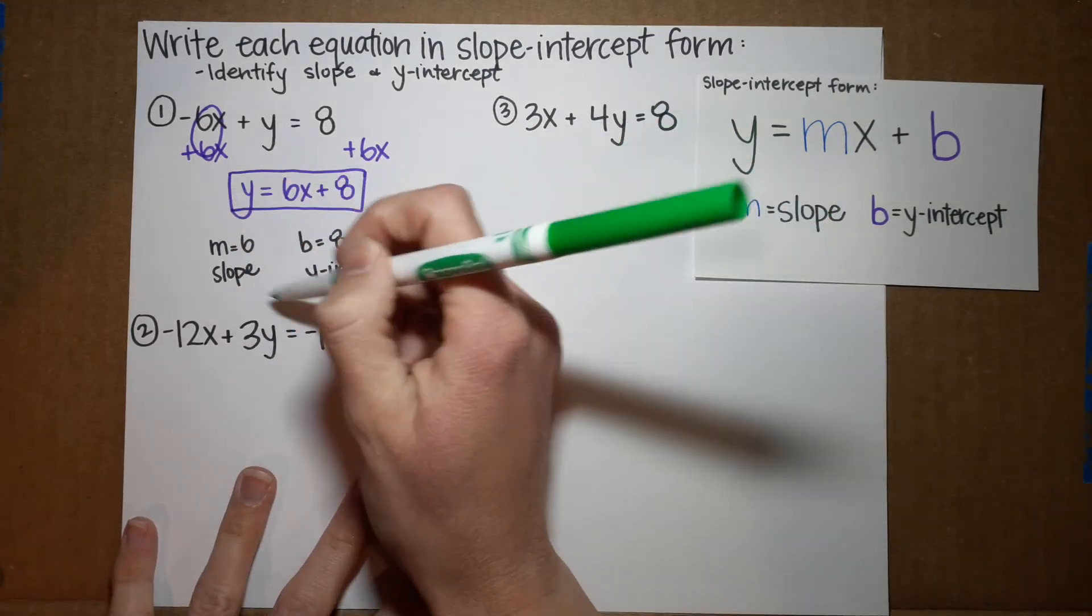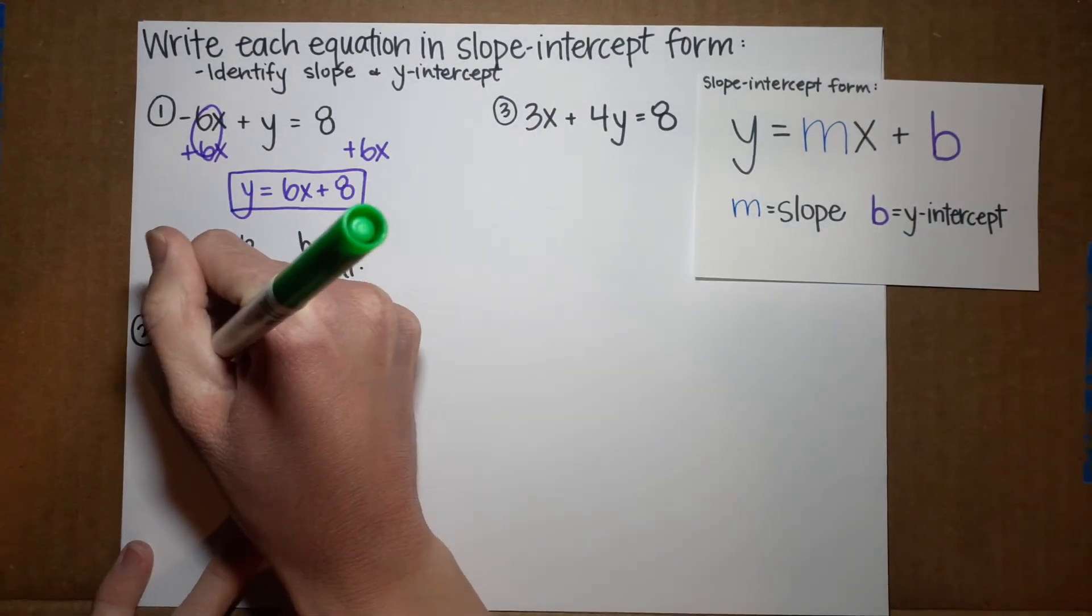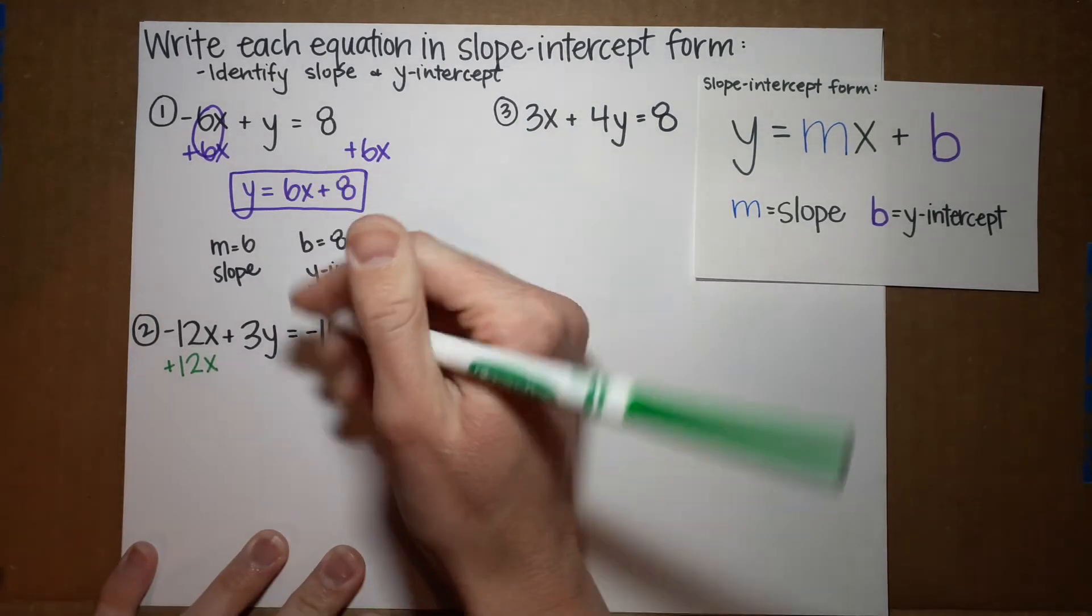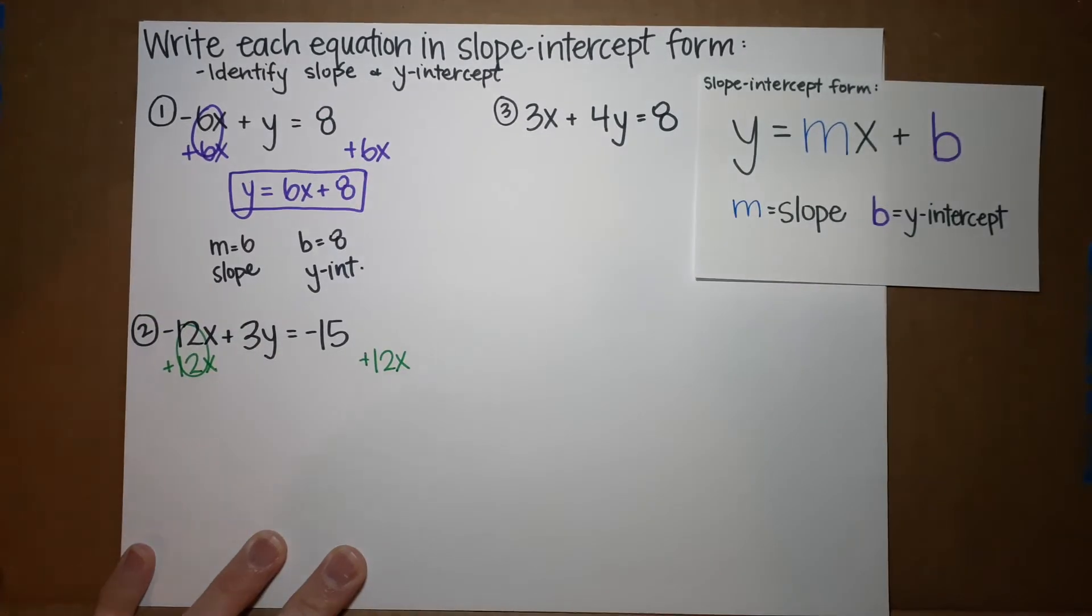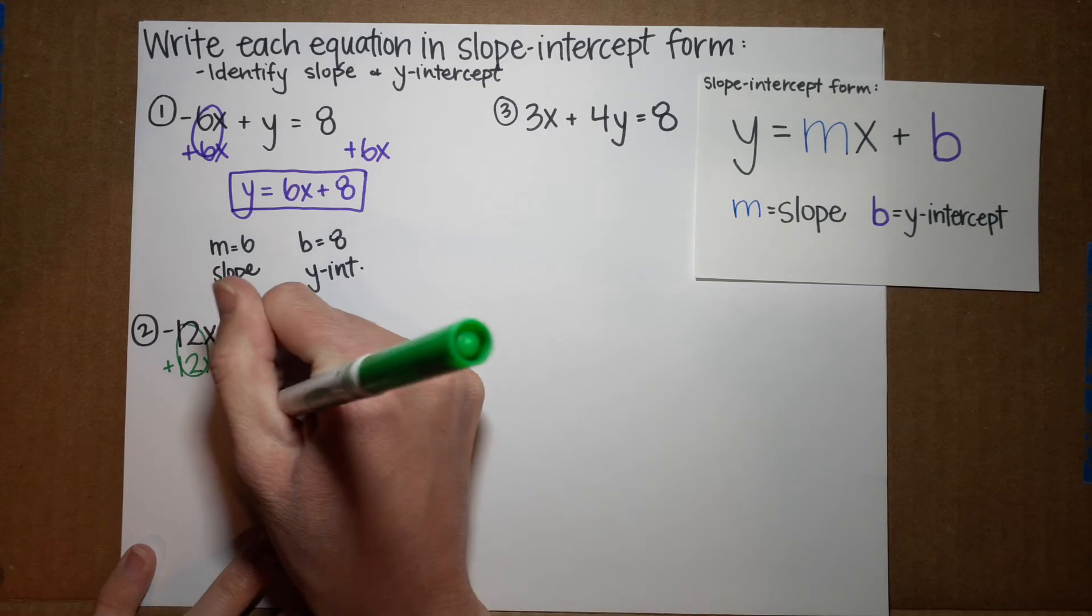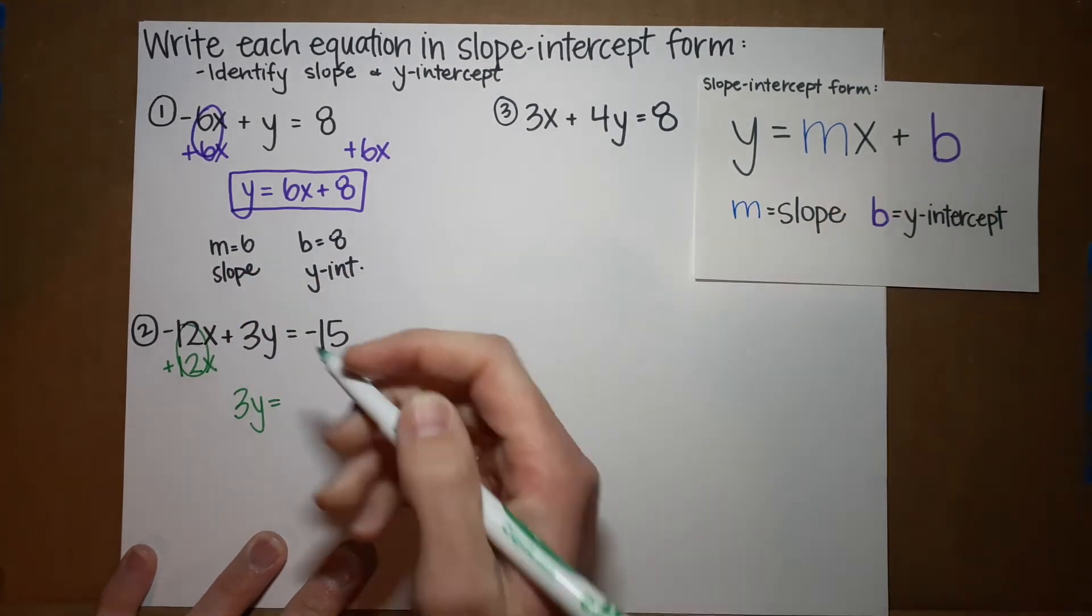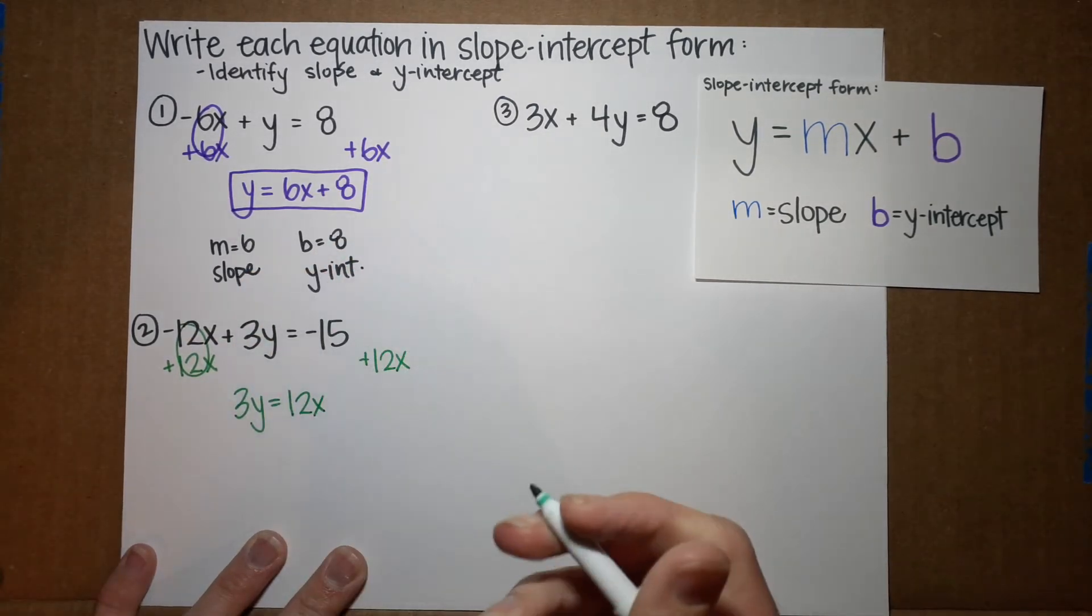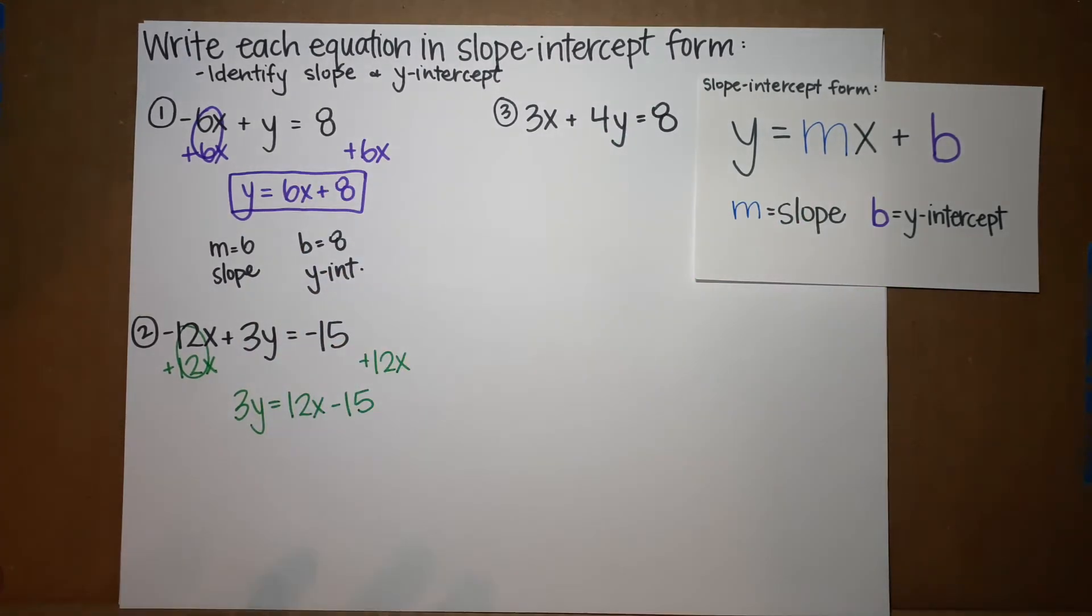So, again, my goal is to get y by itself. I've got this negative 12x. So, I want to get rid of that. So, I'm going to add 12x because that'll get rid of it. I did it to this side. So, I must do it to this side. Guess what? Those become a zero. They're gone. So, I'm left with 3y equals. I'm going to write the x first because that's how my slope intercept form likes to be placed. So, I've got 12x minus 15.